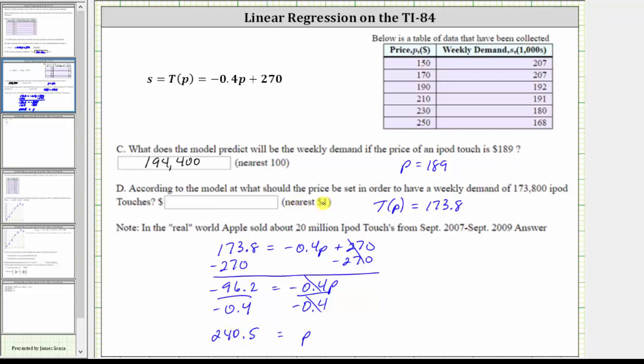But we are told to round to the nearest dollar, and therefore this will round up to $241. So according to the model, if we set the price at $241, the weekly demand will be 173,800 iPods.